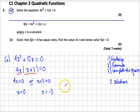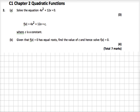So this is our first part of question 2. I'm just going to move on to the page and let's look at part B. This one says, given that f(x) = 0 has equal roots, find the value of c and hence solve f(x) = 0. But first of all, it's given us information about what f(x) is.